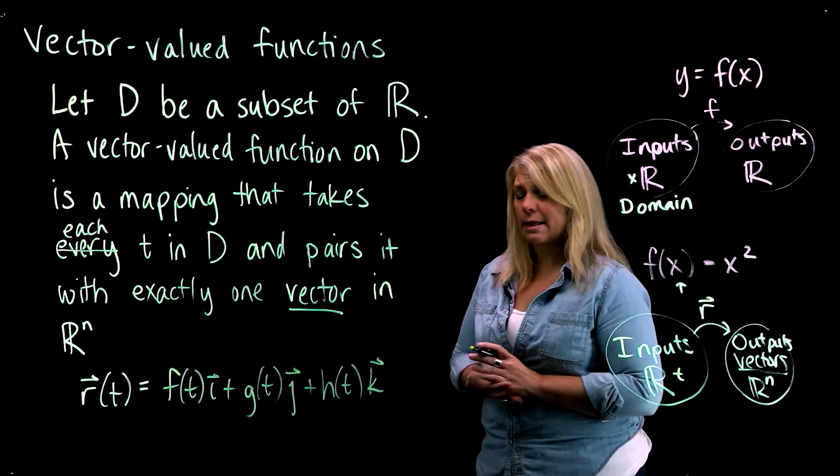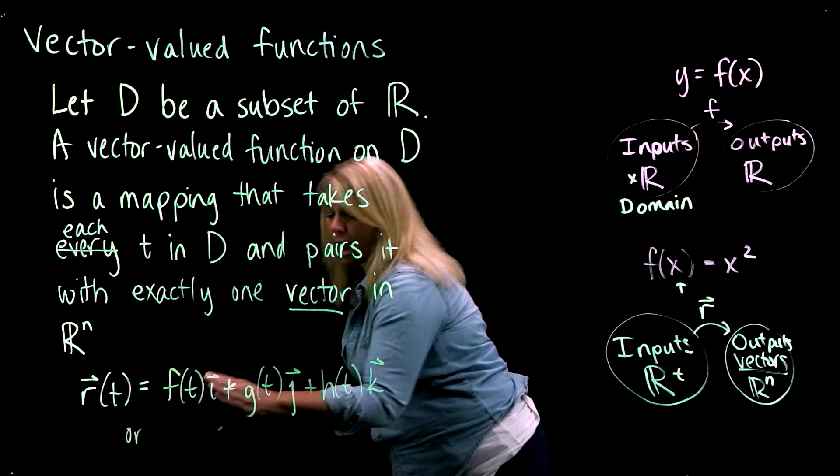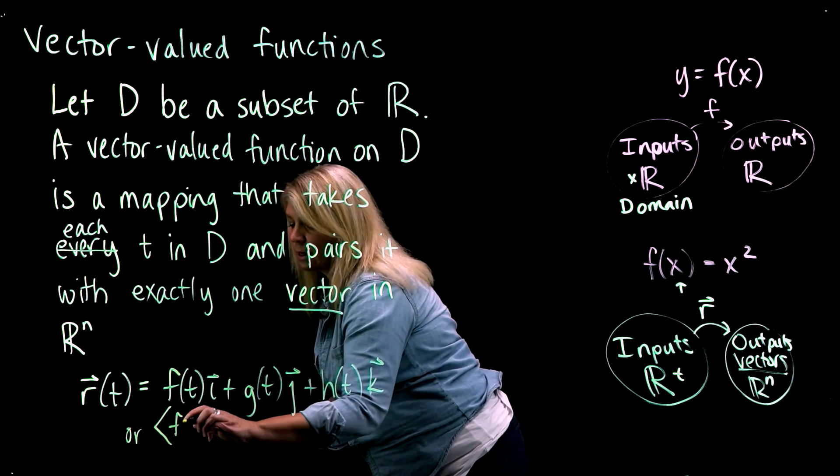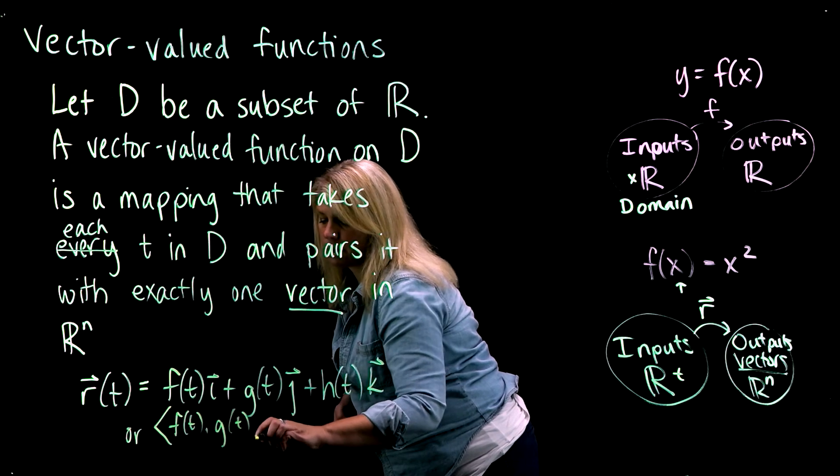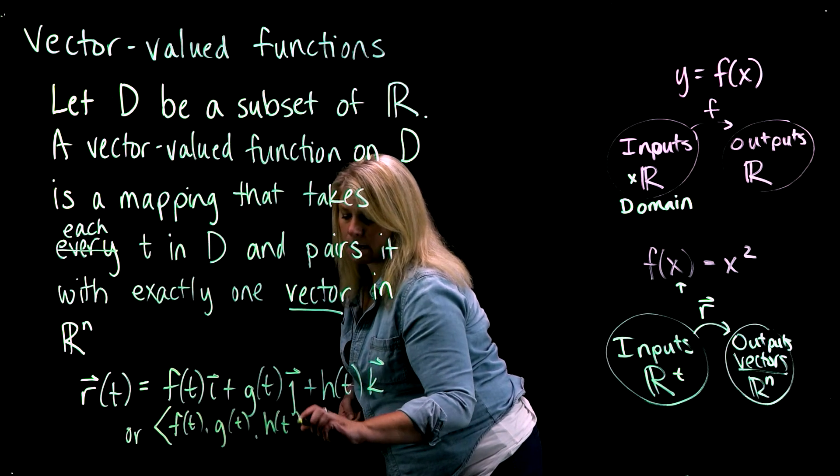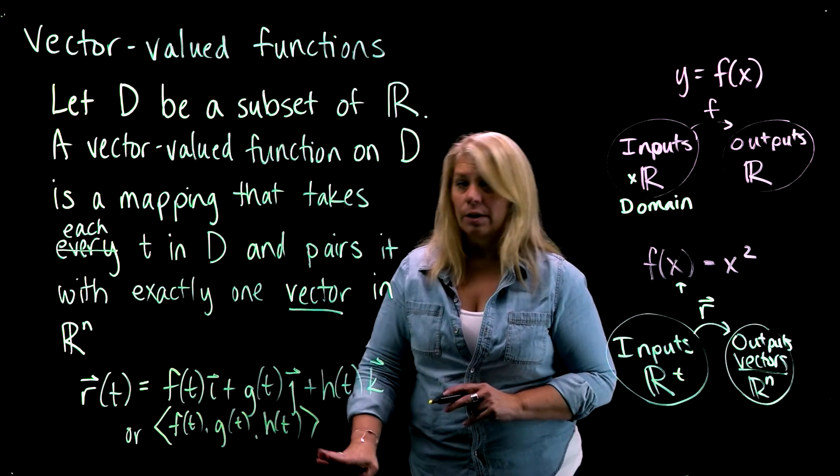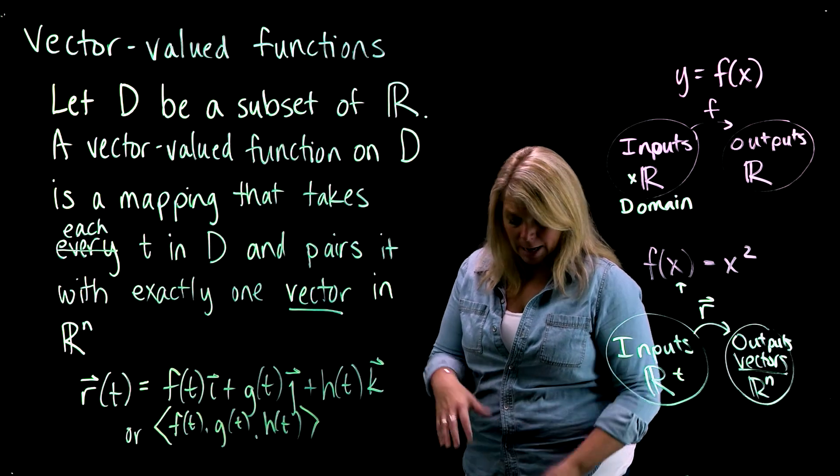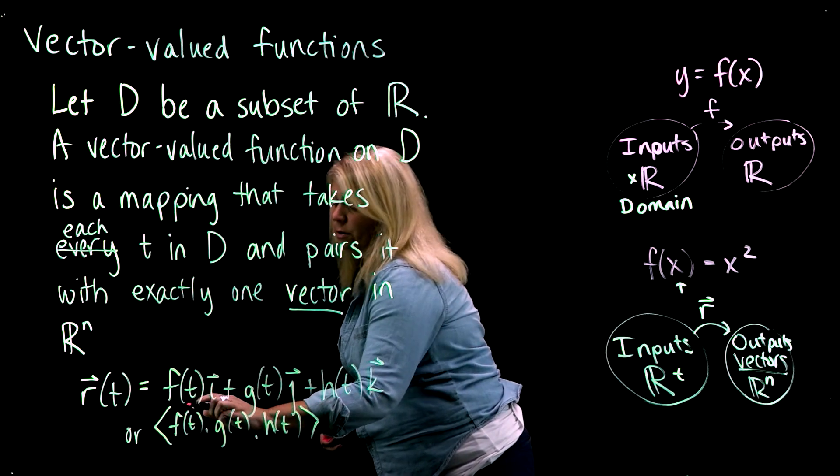We might write that vector-valued function like this, or sometimes instead of the i, j, k notation for vectors, we sometimes use those brackets and commas: f of t, g of t, h of t. But the main idea here is that your output is a vector, so you're talking about components. We often use f, g, and h to denote these component functions.